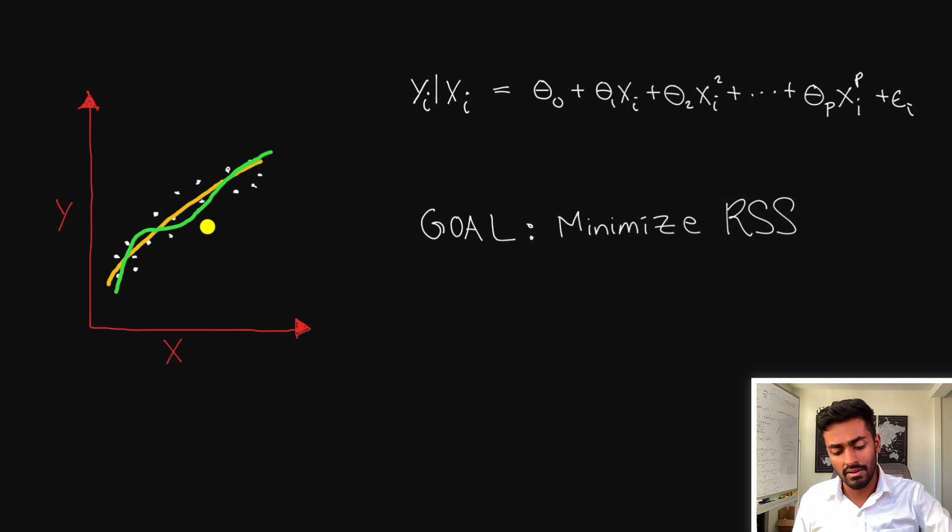The reason this happens is primarily because each of these theta terms are not constrained to be any value when they try to minimize the residual sum of squares and because of that it can take on any complex function in order to just achieve the overarching goal of minimizing the residual sum of squares.